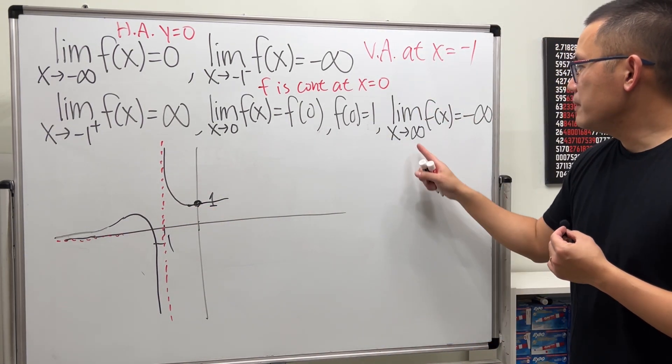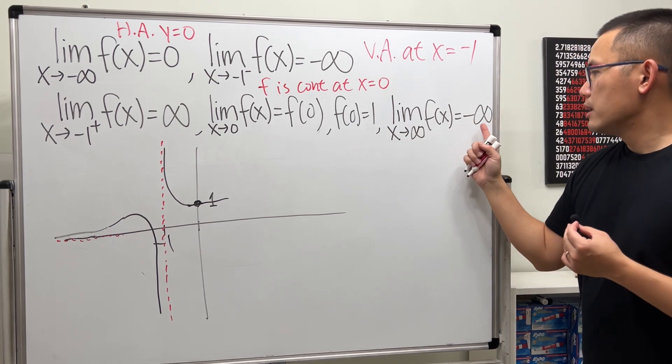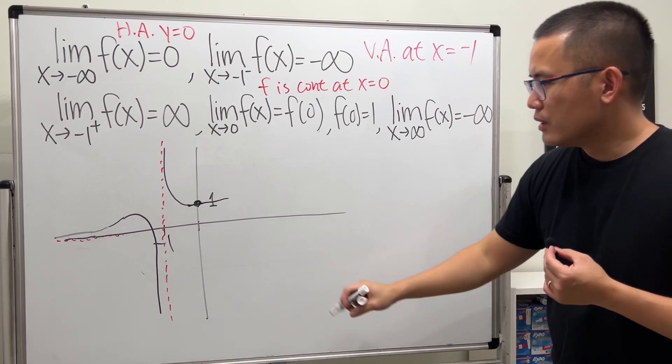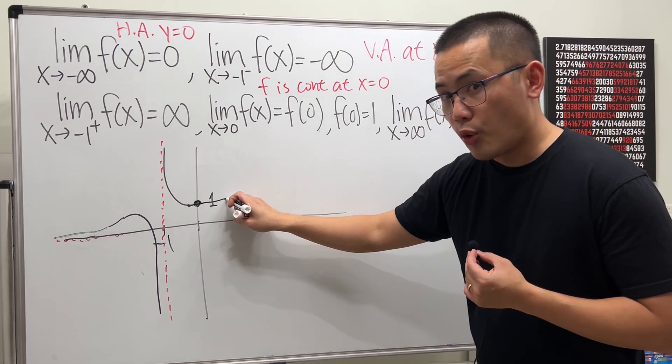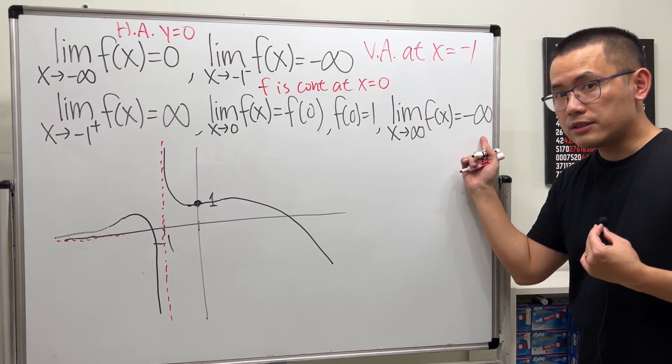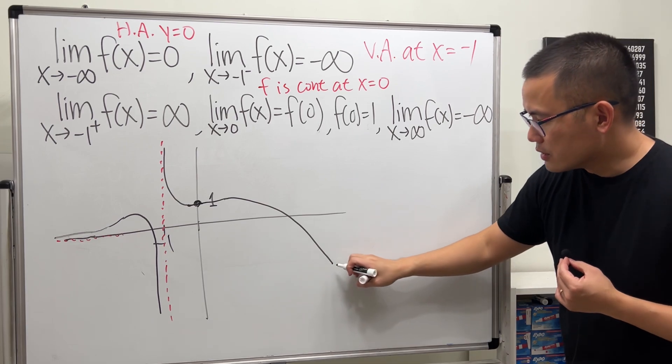Okay. And then, lastly, as x goes to positive infinity, the value of the function will be approaching negative infinity. So I'm just going to go down. But this is not a vertical asymptote, though. Because x is approaching positive infinity.